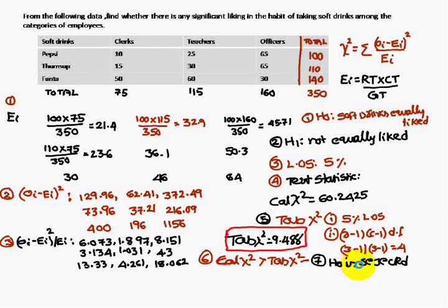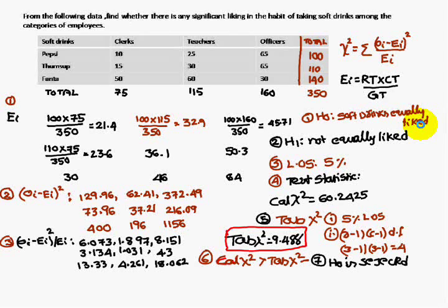Therefore H0 is rejected. H0 stated that soft drinks are equally liked — since it is rejected, the conclusion is that soft drinks are not equally liked.